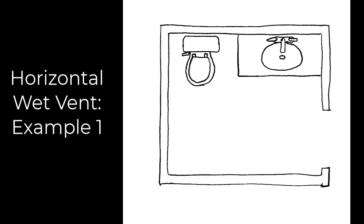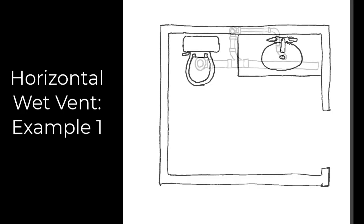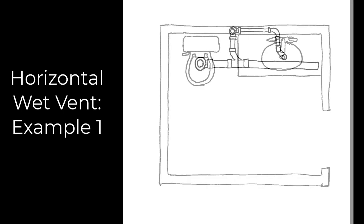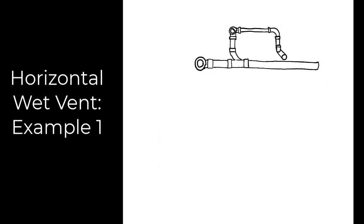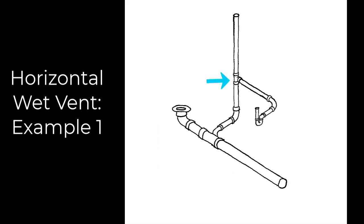Let's have a look at one more option for this half bathroom. Keep in mind that each of these different approaches may be going in parallel with joists or other structures, or maybe we're going through them — we're just trying to come to those fixtures from the best approach. Once again, the lavatory drain is being used both as a drain and a vent for the toilet. These are all very simple because there are only two fixtures involved.